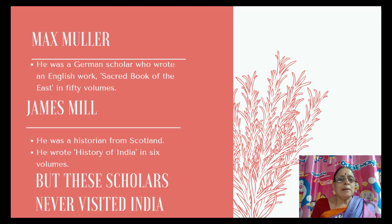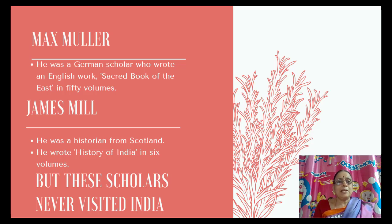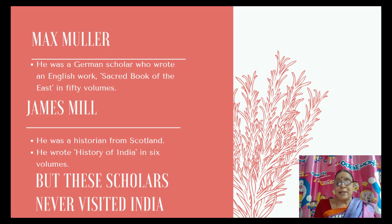Max Muller was a German scholar who wrote an English work, Sacred Books of the East, in 50 volumes, introducing many interesting facts about the history of India. James Mill was a historian from Scotland who wrote the History of India in 6 volumes. Remarkably, these scholars never visited India — they studied our rich ancient culture and history while sitting in their own country.